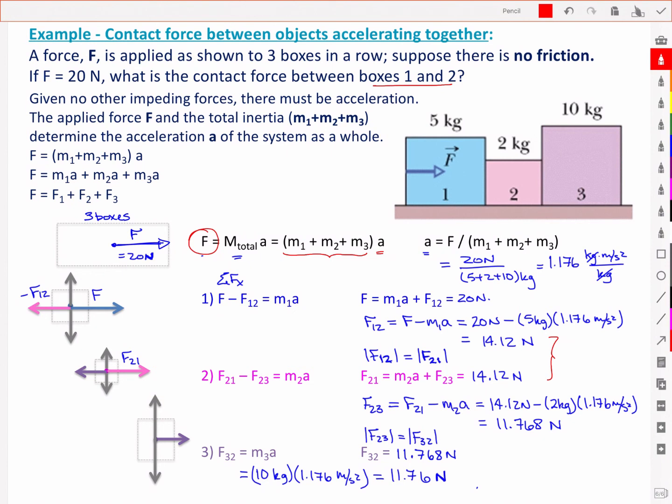Collectively, they all move together at the same acceleration. And so from that total force, I can see that for mass 1 times its acceleration, 5.88 newtons was needed to accelerate box 1, 2.352 newtons was needed to accelerate box 2 at the same acceleration, and 11.76 newtons was needed to accelerate box number 3.